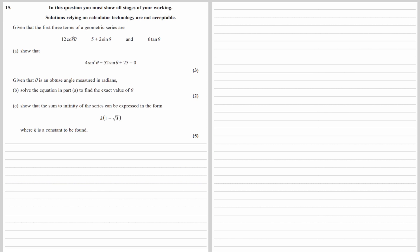In a geometric sequence we've got a common ratio — there's something you multiply the first term by to get the second term, and that same thing you multiply the second term by to get the third term. So the second term divided by the first term must equal the third term divided by the second term.